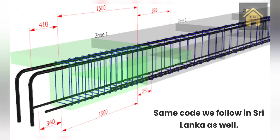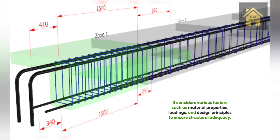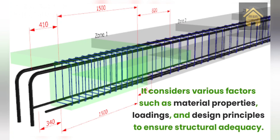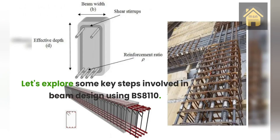This code provides guidelines and procedures for the design of reinforced concrete structures, including beams. It considers various factors such as material properties, loadings, and design principles to ensure structural adequacy. Let's explore some key steps involved in beam design using BS8110.